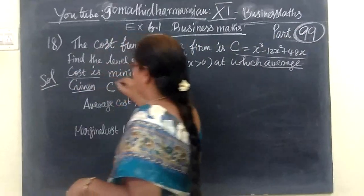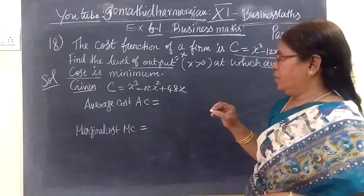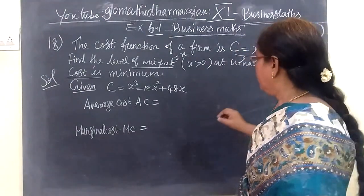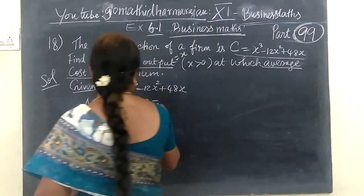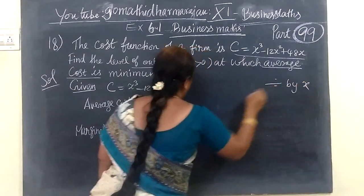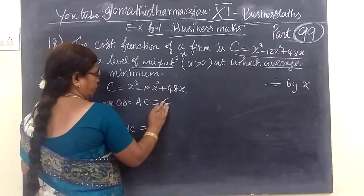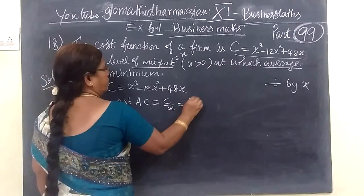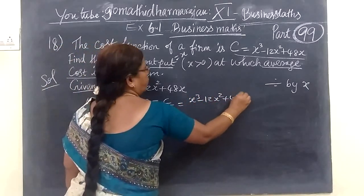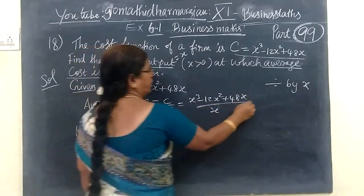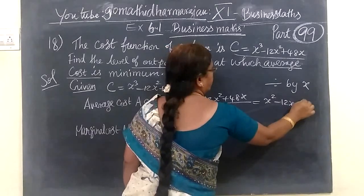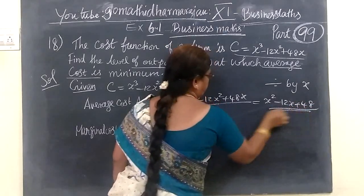The average cost is C divided by X. So C by X gives us X squared minus 12X plus 48. So divide C by X to get the average cost function.